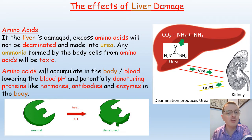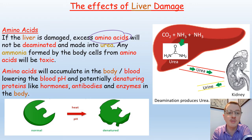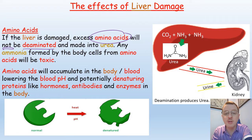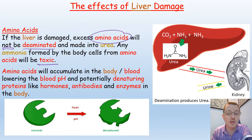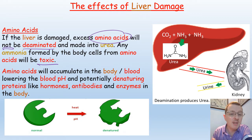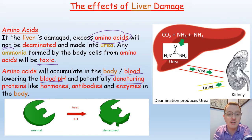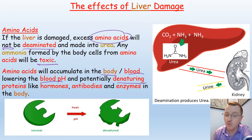What about the effects on amino acids? If the liver is damaged, any excess amino acids will not be deaminated and made into urea. Any ammonia formed by the body's cells from amino acids will be toxic to those cells because the liver can't break down the ammonia. Amino acids will accumulate in the body and in the blood, lowering the blood pH and potentially denaturing proteins like hormones, antibodies and enzymes within the blood and body.